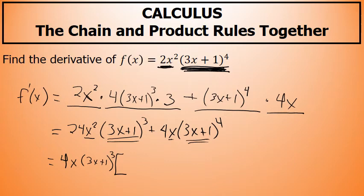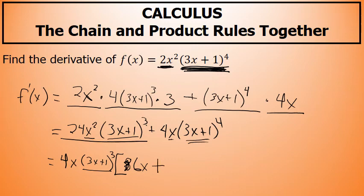Now what I'm left with — the two terms inside the grouping symbol after taking the common factor out to the front — is: I started out with 24 in the first term but factored out a 4, so I'm left with a factor of 6. I had x squared but factored out x, so I'm left with x to the first power. Originally in the first term I had 3x plus 1 to the third, but that's exactly what I factored out to the front, so I won't rewrite it inside the grouping symbol. Plus, the second term originally had 4x, but that's exactly what was factored out. The second term also had this quantity to the fourth power; I factored the third power out to the front, so I'm left with that quantity to the first power inside the grouping symbol.